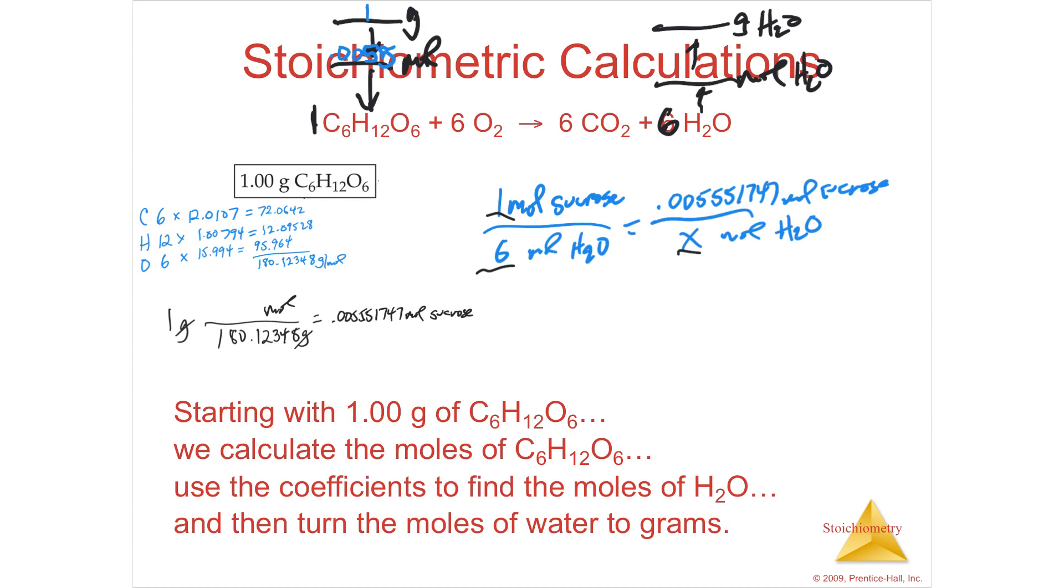I can say that 1 times x equals 6 times 0.000. That's going to be 6 times 0.00555 divided by 1. And I'm going to get x equals 0.033310482 moles of water. And that is what you're going to have right here, 0.0333.